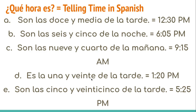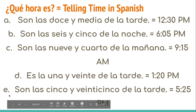Es la una y veinte de la tarde: it's 1:20 p.m. Son las cinco y veinticinco de la tarde: it's 5:25 in the afternoon.